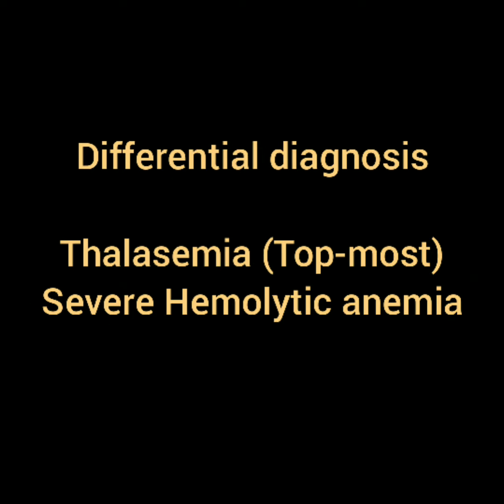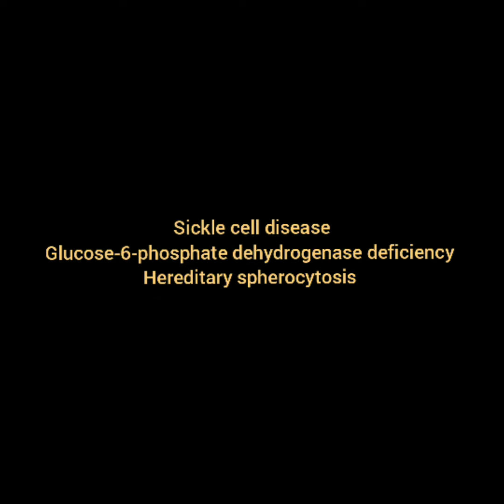If you are asked to tell the differential diagnosis, you will say: my topmost differential diagnosis is thalassemia, but other differential diagnoses could be severe hemolytic anemias — those other than thalassemia — such as sickle cell disease, glucose-6-phosphate dehydrogenase deficiency, and hereditary spherocytosis.